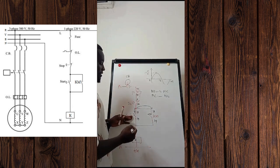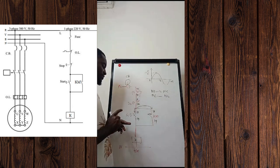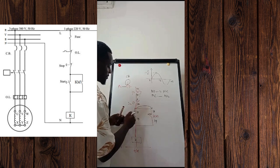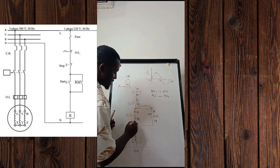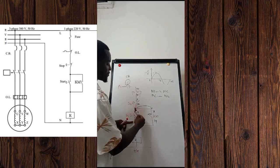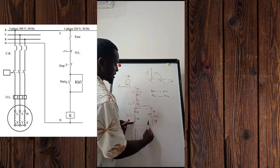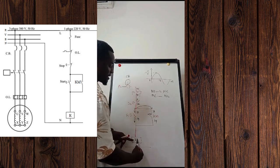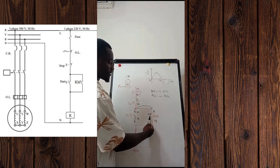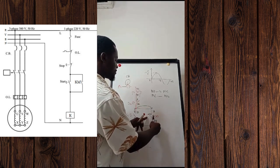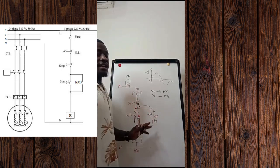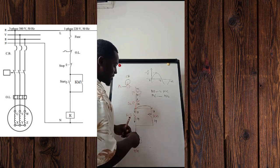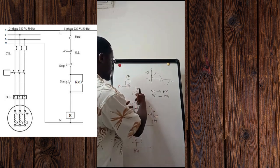Since this is a push button, once you press and release your hand, it retracts back. Once it retracts, that contact returns to open and current cannot flow through it anymore. However, since the coil was already energized, the auxiliary contact has closed, and current now keeps moving through it to keep the coil continuously energized. This is what some books and lecturers call a hold-on contact — it holds the coil to keep it energized, allowing current to keep flowing from the upstream.